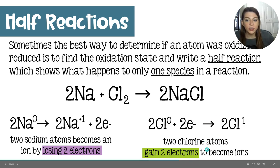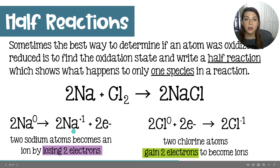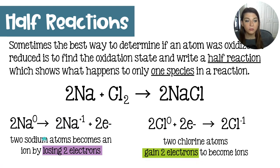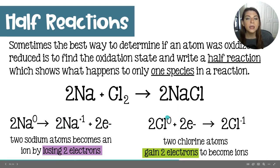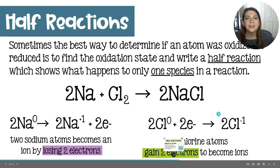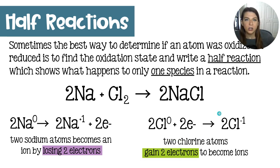Two chlorine atoms gain two electrons to become ions. Because we're gaining electrons, this is our reduction reaction, and over here we have the oxidation reaction because we're losing two electrons. The number of electrons lost is equal to the number of electrons gained — that is another way that the law of conservation can help us check our work on half reactions.